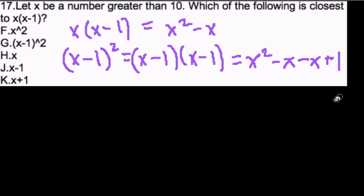We can simplify this — negative x and negative x gives us negative 2x. So choice G expands to x squared minus 2x plus 1.